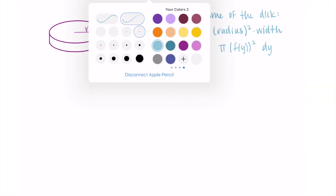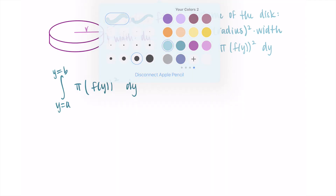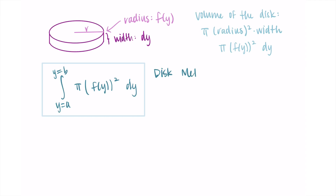The formula for finding the volume is that we add all of these discs up with an integral. We take these infinitely small little discs and add them all together. So we integrate from a to b of π times [f(y)]² dy — where f(y) is our radius and dy is our width. This is our formula for revolving around the y-axis. It looks just like the one for the x-axis, except everything is y instead of x.